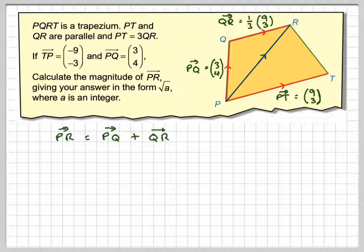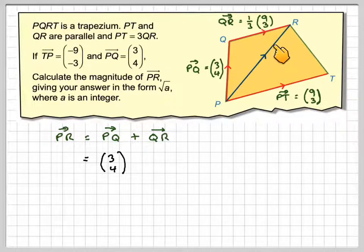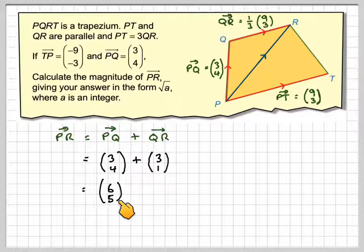PQ is going to be (3, 4) and QR is going to be (3, 1) - one third of this one - so it's going to be (3, 1). 3 plus 3 makes 6 and 4 plus 1 makes 5.